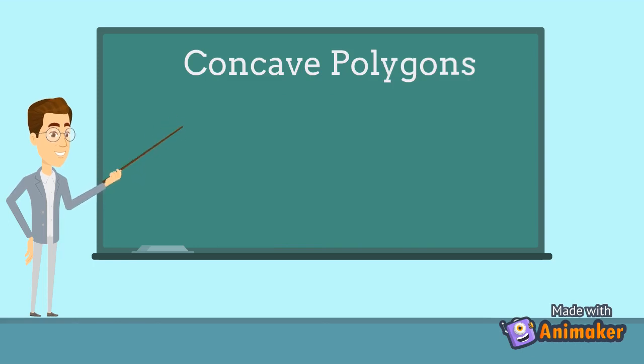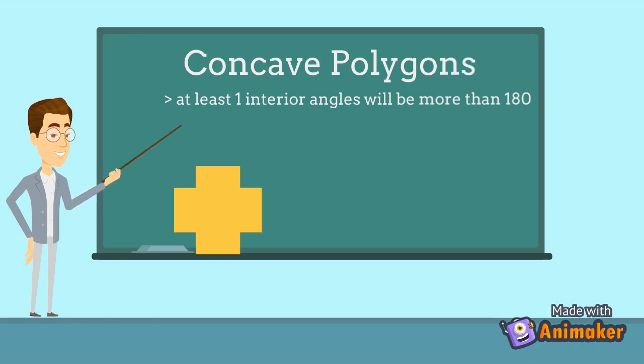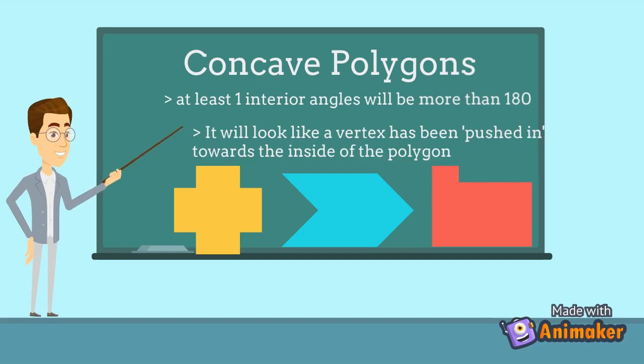Then we have concave polygon. A concave polygon is defined as a polygon with one or more interior angles greater than 180 degrees. It means at least one interior angle will be a reflex angle. It will look like a vertex has been pushed in towards the inside of the polygon.